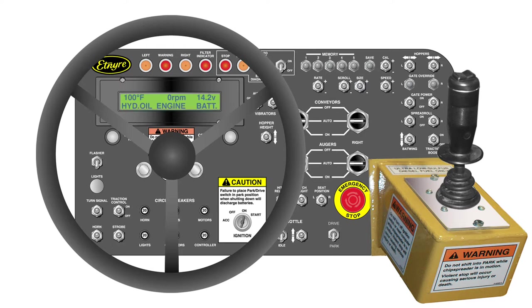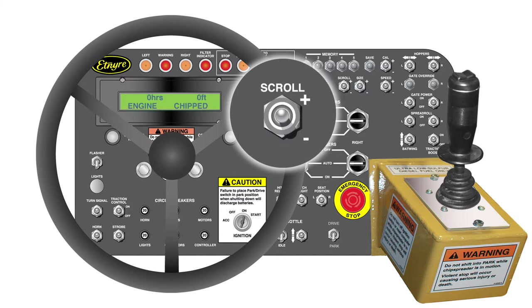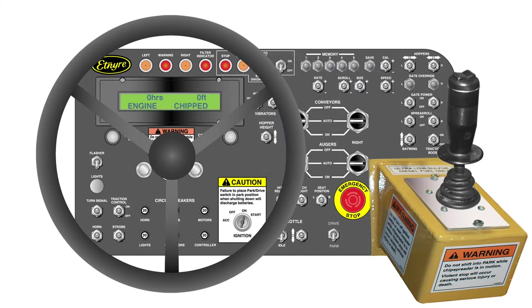To move to the next screen, press the scroll switch down. This screen shows the hours on the machine on the left side and the feet chipped on the right side. When the ignition key is turned on but the engine is not running, the hours will not accumulate because the hour meter is started and stopped by an oil pressure switch.